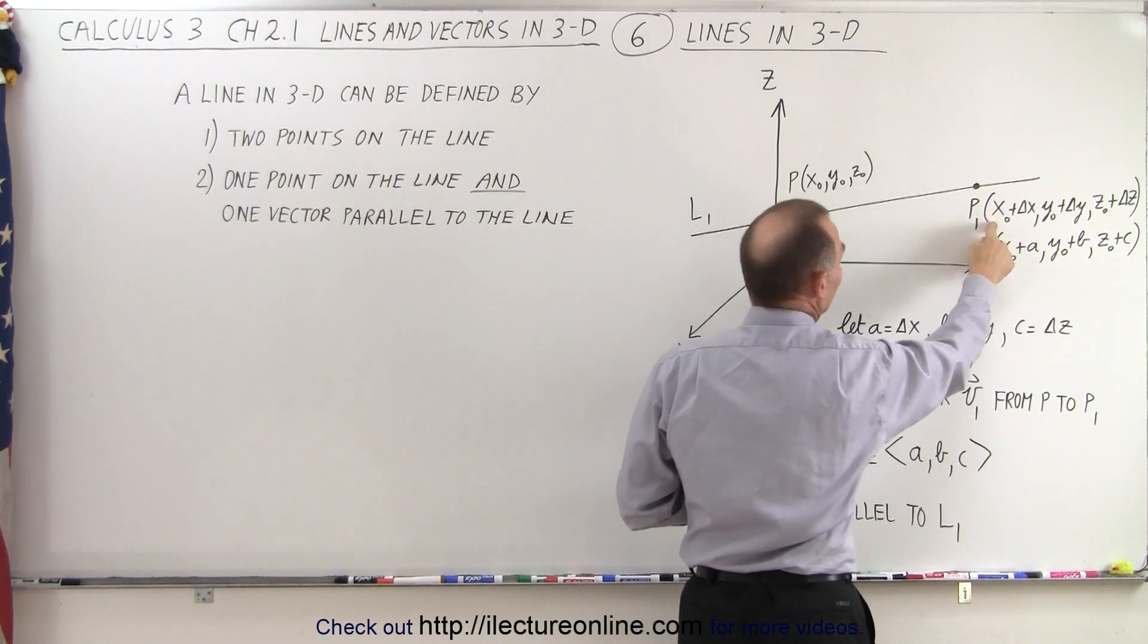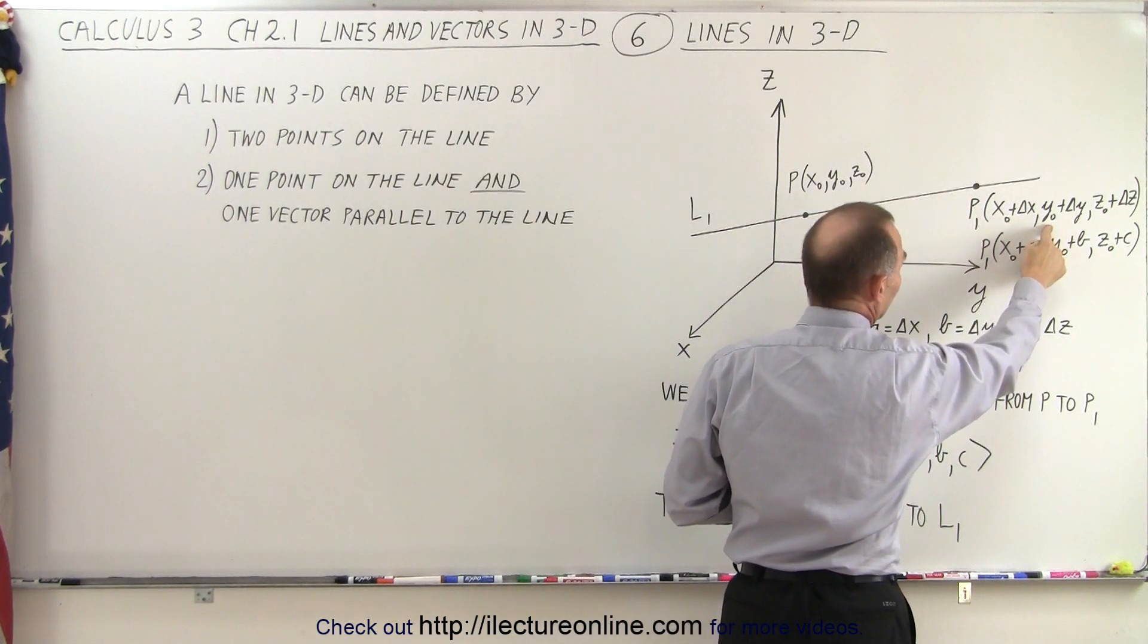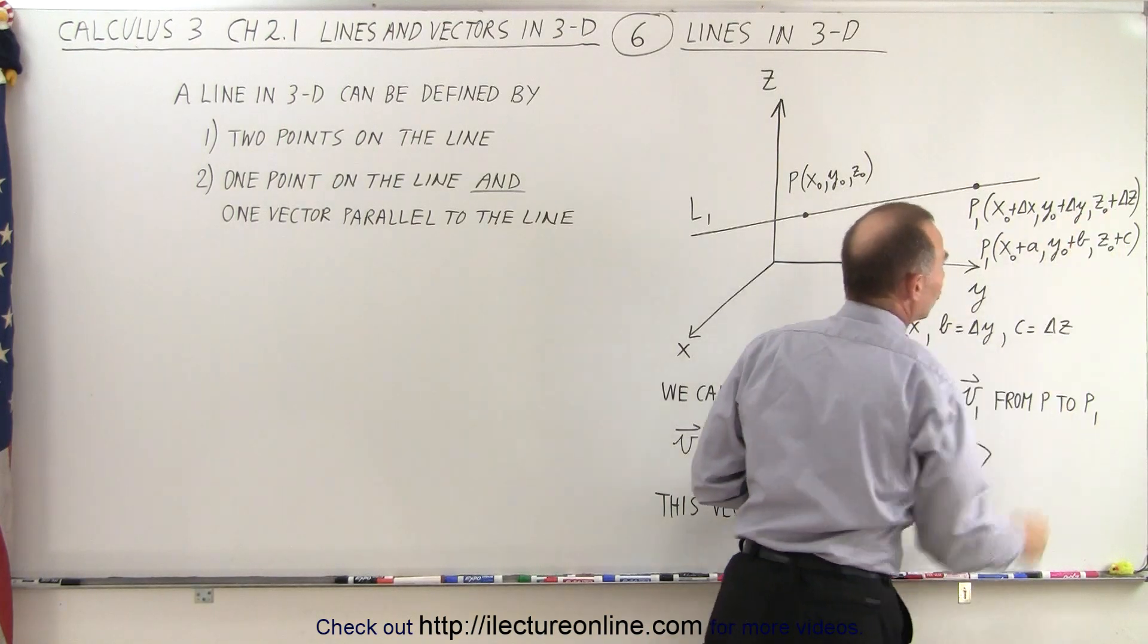And so the coordinates of that point are x sub-naught plus the change in x, y sub-naught plus the change in y, z sub-naught plus the change in z.